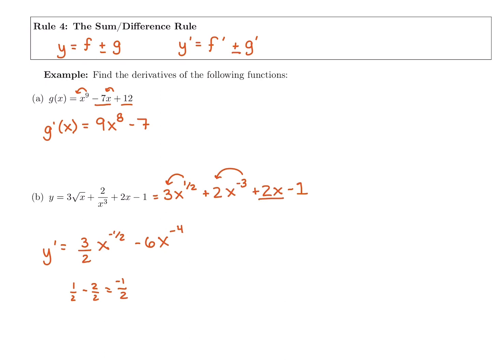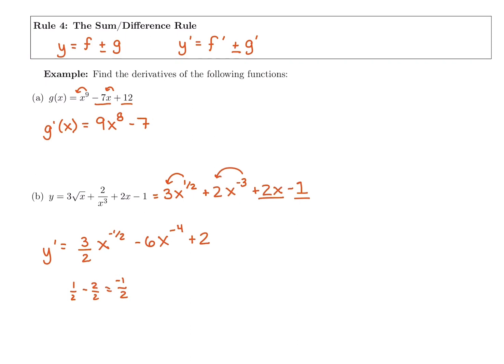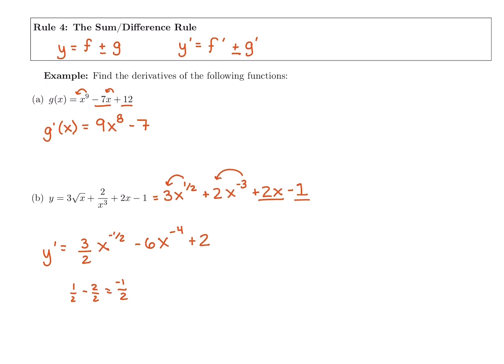The derivative of two x is our mini rule — just like the derivative of negative seven x was negative seven, now the derivative of two x is two. Lastly, we have a constant: the derivative of negative one is zero. Derivative of every number that doesn't have an x or variable in it is just zero. So there's our full derivative.